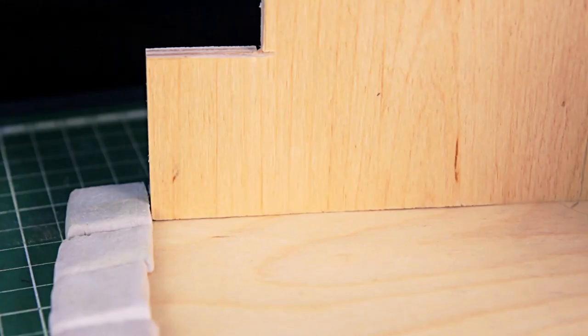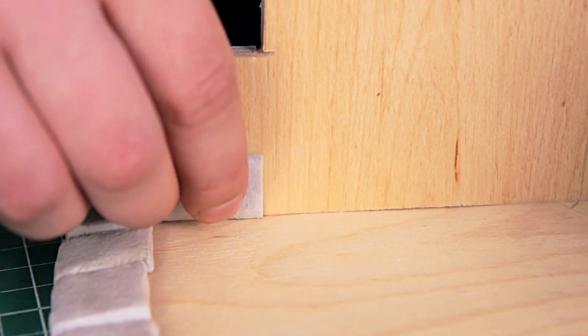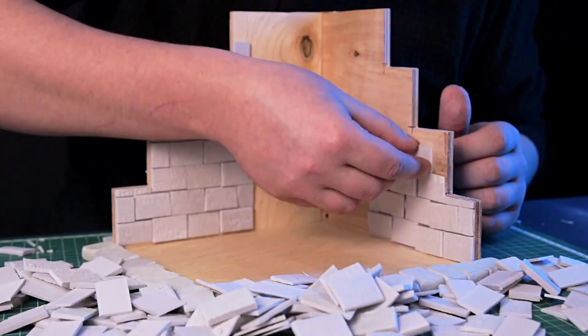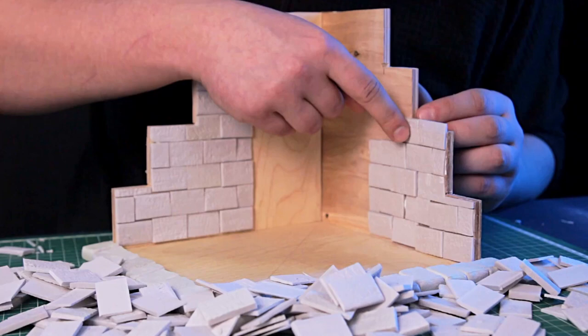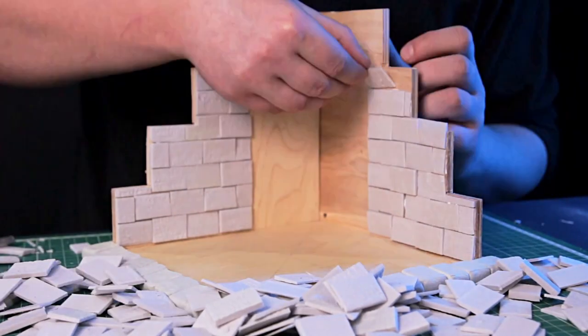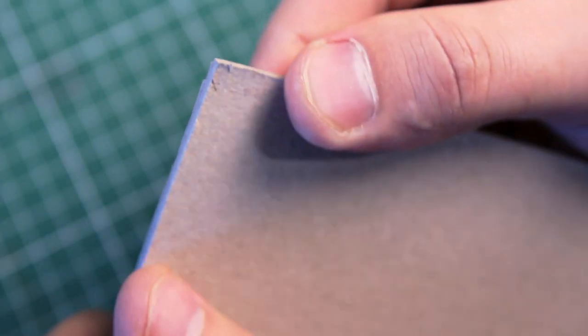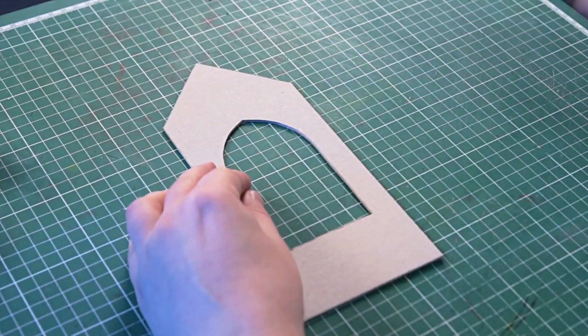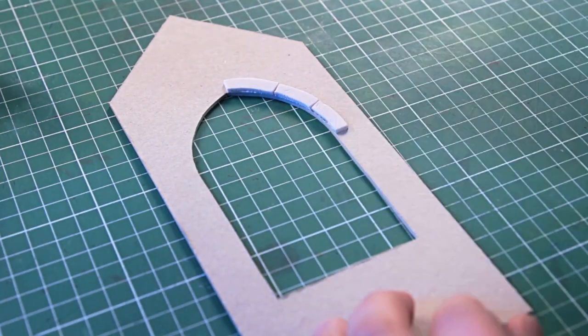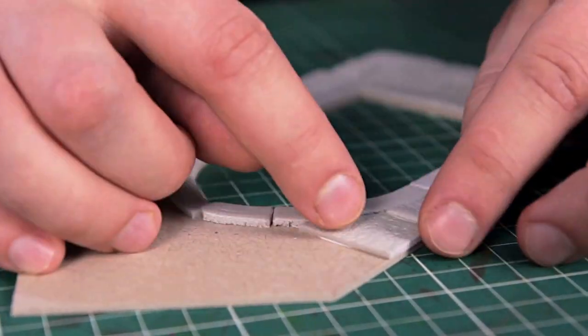The bricks are ready and I am going to glue them all over the walls. I made the wall with the window out of 2 mm thick chipboard. I glued it with bricks, using the same principle, nothing complicated.